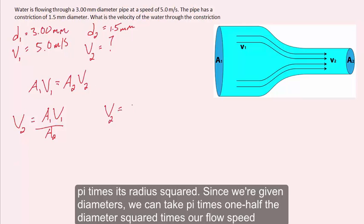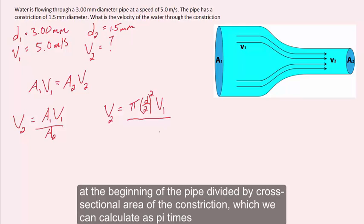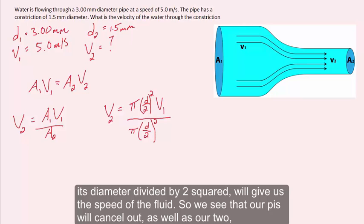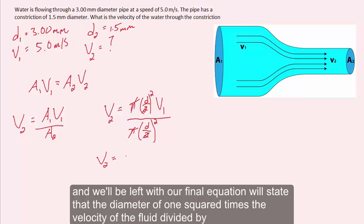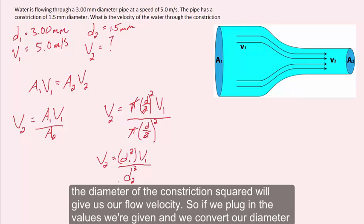Since we are given diameters, we can substitute pi times one-half the diameter squared. This gives us pi times (d₁/2)² times the flow speed at the beginning of the pipe, divided by pi times (d₂/2)². The pi's and the factor of 2 cancel out, leaving us with the final equation: d₁² times the velocity of the fluid divided by d₂² gives us the flow velocity at the constriction.